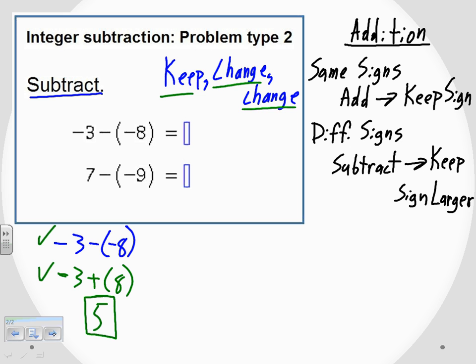So, negative 3 minus negative 8 gave us a positive 5. If it seems a little counterintuitive that I had all those negatives and ended up with a positive, that's the way it worked out.